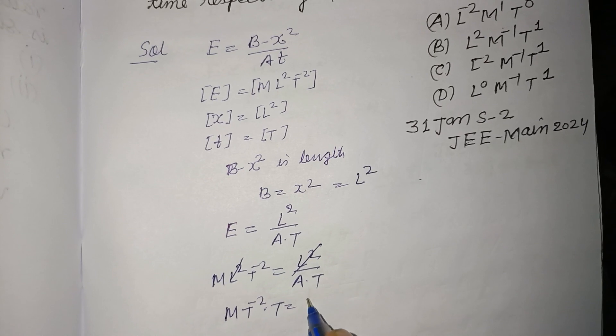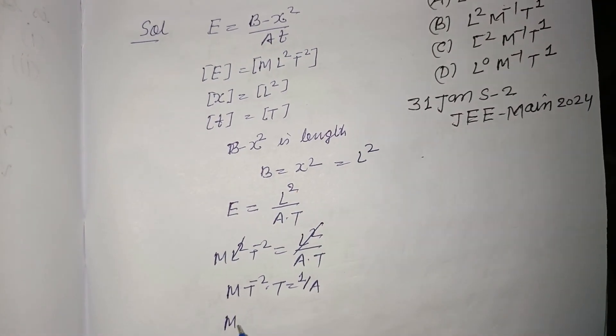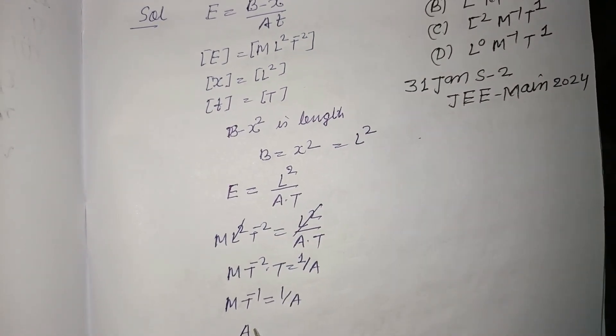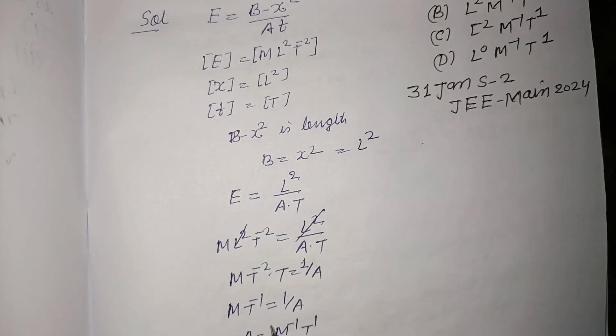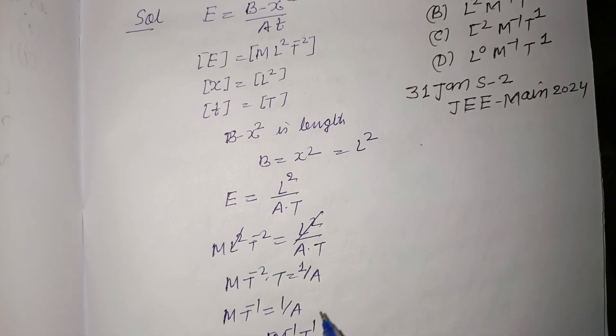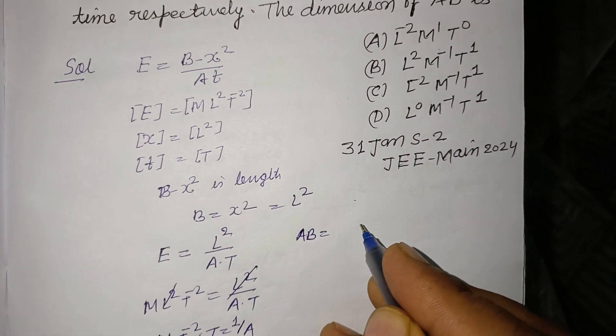This equals 1/A. So this is MT⁻¹ = 1/A. And A is M⁻¹T¹. So dimension of A is M to the power -1, T to the power 1.